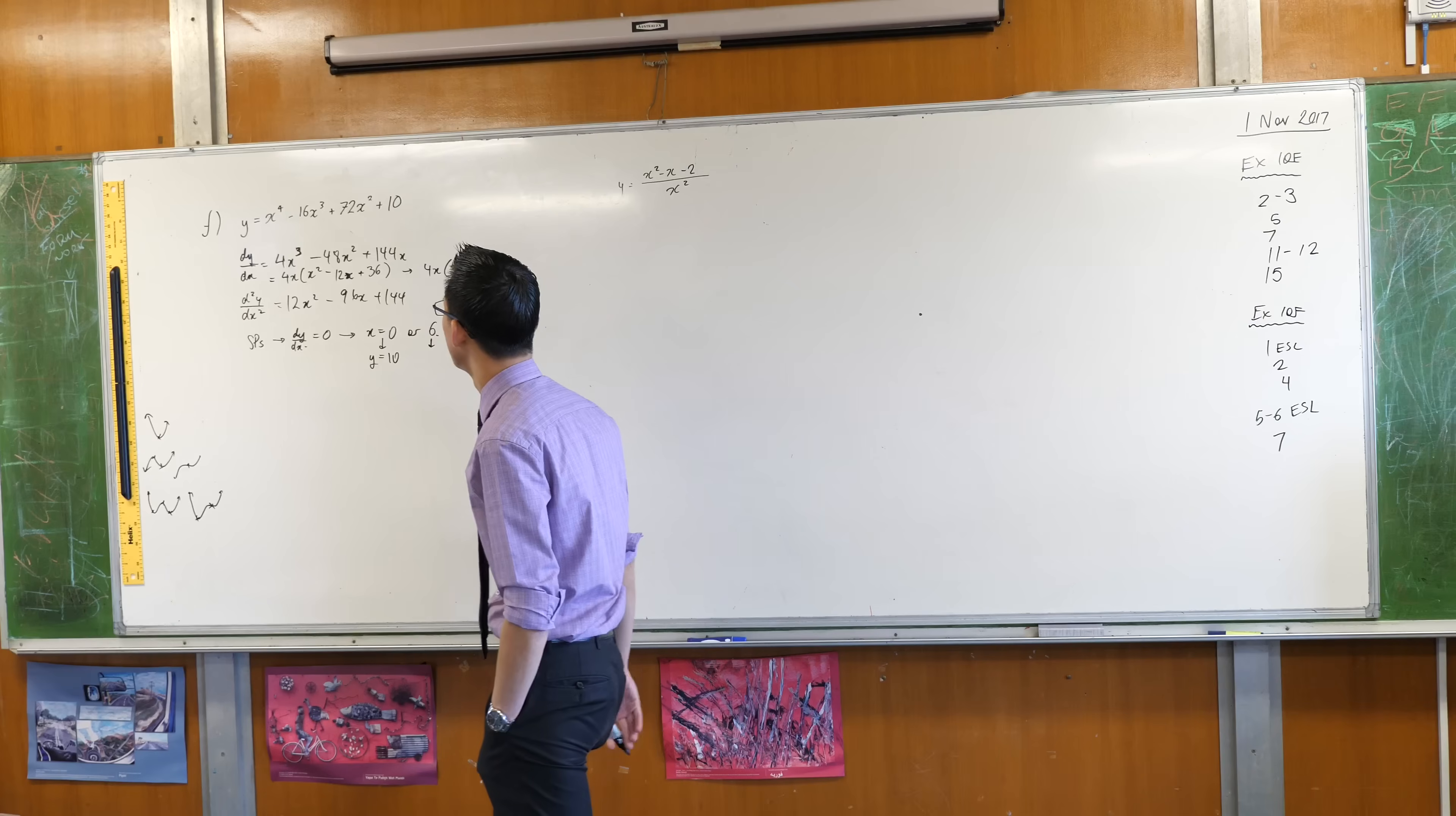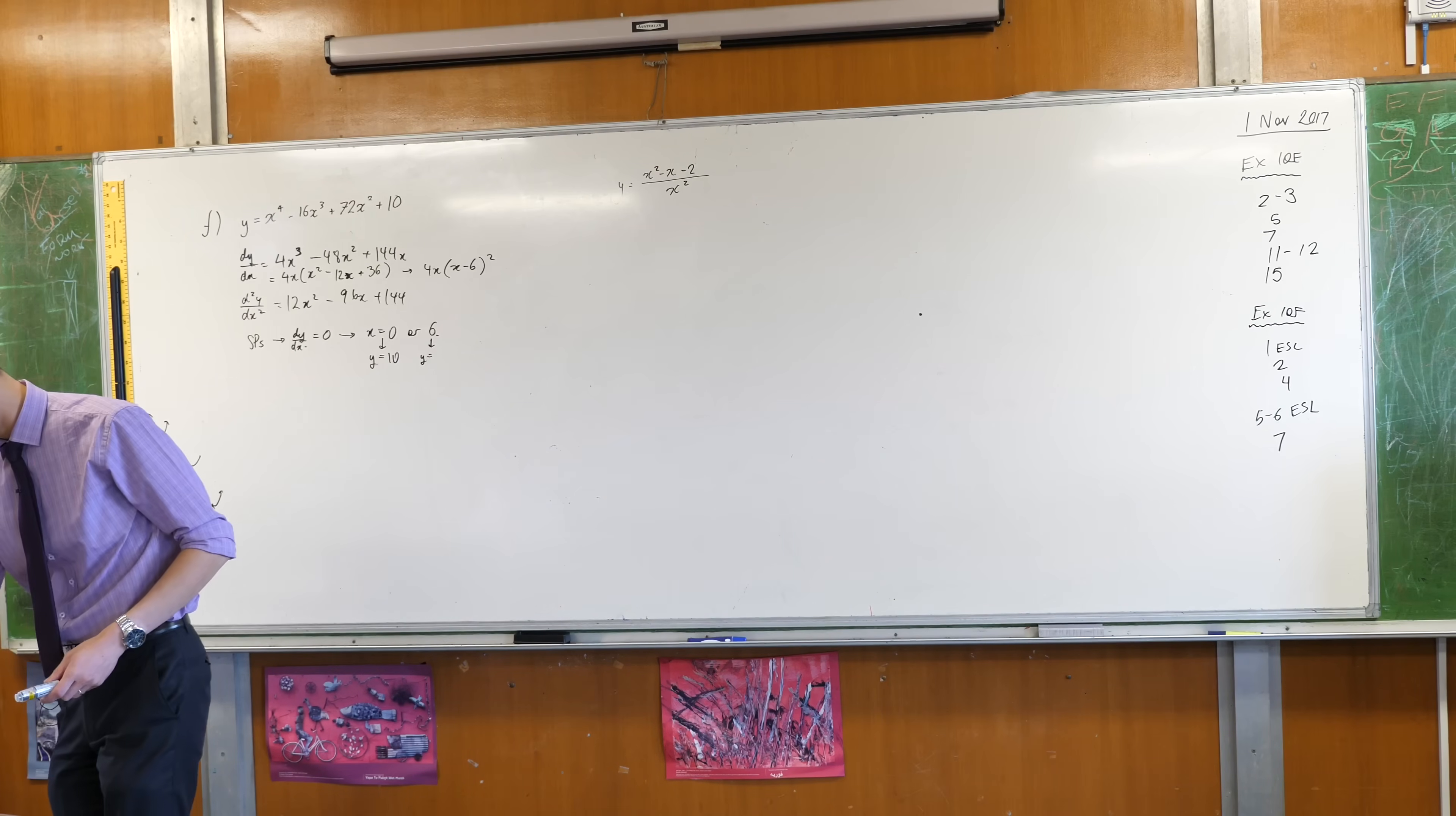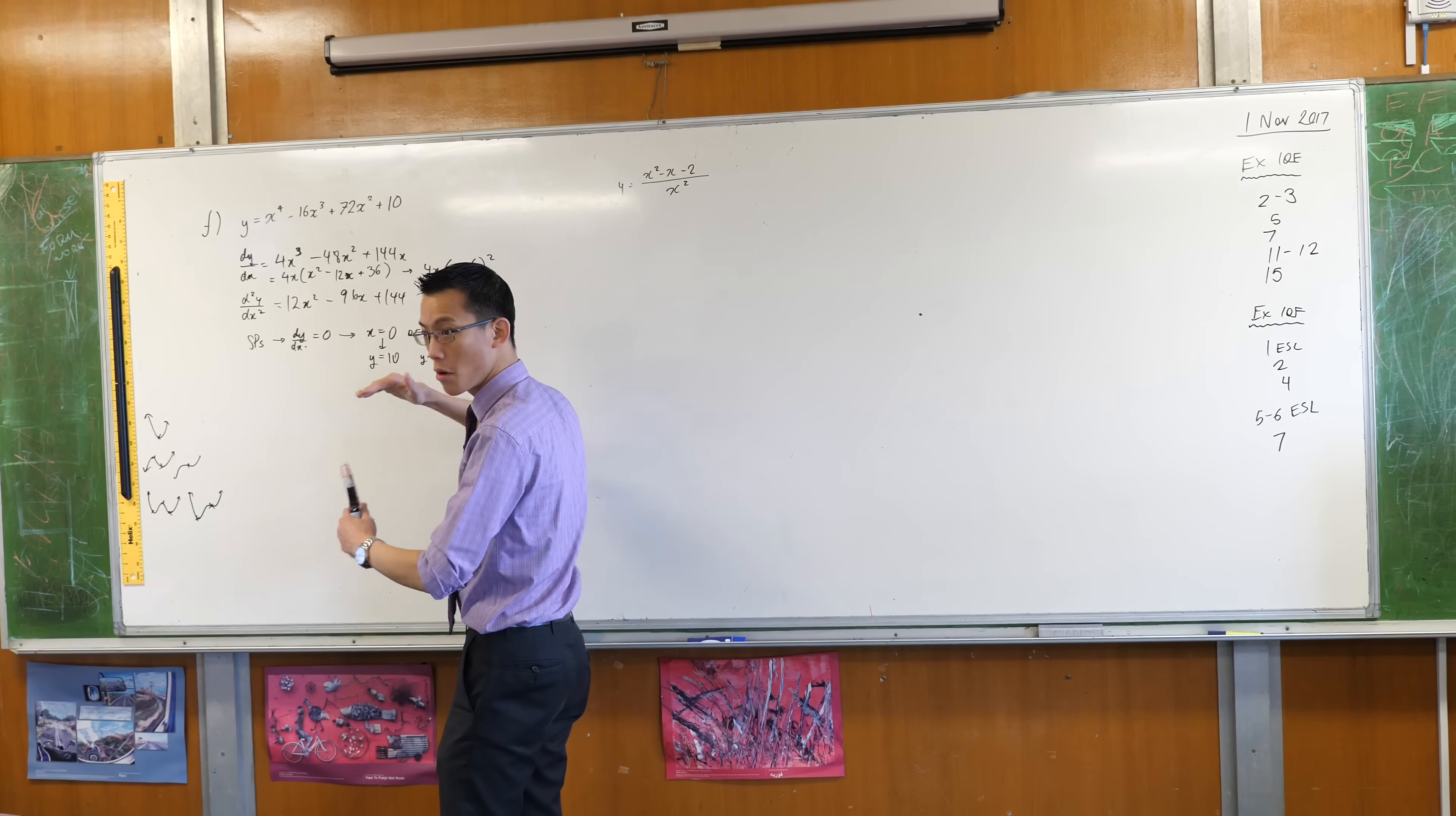Let's use our calculators. When x equals six, we're going to have, six cubed is 216, so six to the power of four is 1296 minus, my brain is already melted by now. That equals negative 442.